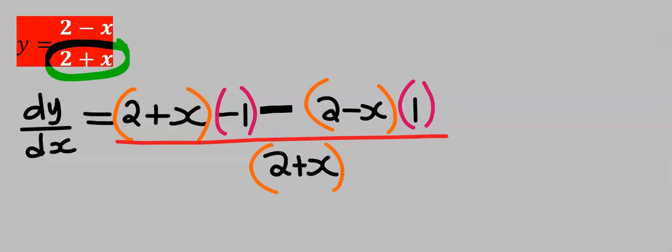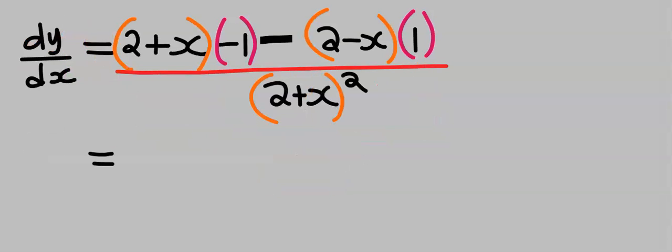However, according to the formula of the quotient rule, I'm going to include a squared at the denominator only. Next, minus 1 times 2, we're going to get minus 2. Next, minus 1 times x, we're going to get minus x.